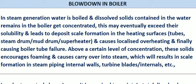In a boiler, water is continuously getting heated up and steam generation is happening. Due to that, the dissolved solids in the water will remain as such in the water, and the water will evaporate to form steam. So automatically the concentration of dissolved solids in the water will get increased. In certain stages they exceed their solubility, and there is scale formation on the heating surfaces — the boiler tubes, water wall tubes, superheater tubes, and the steam drums.